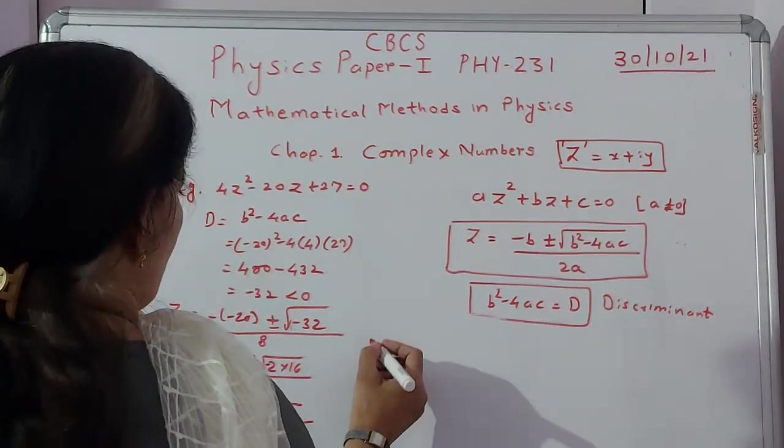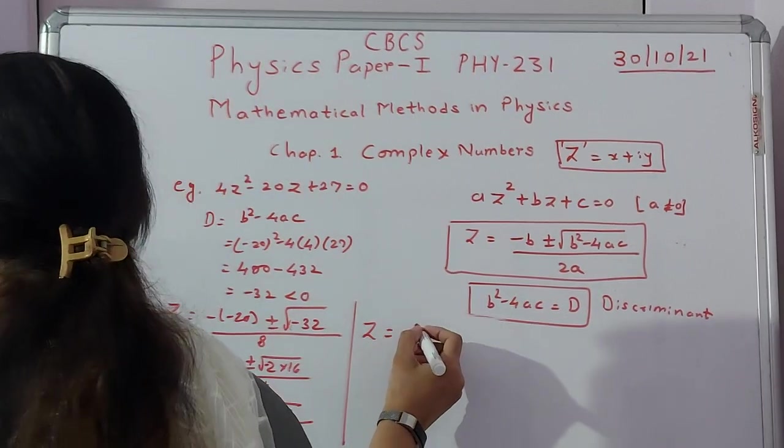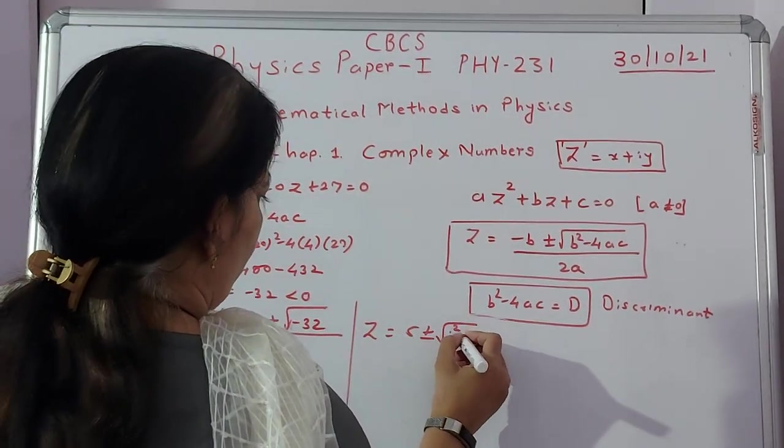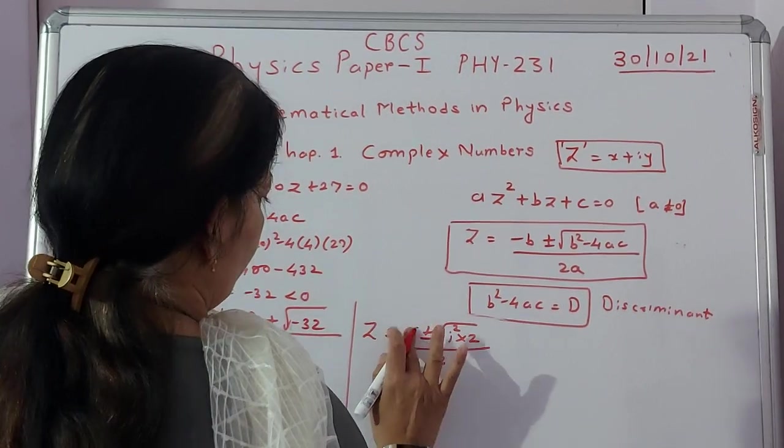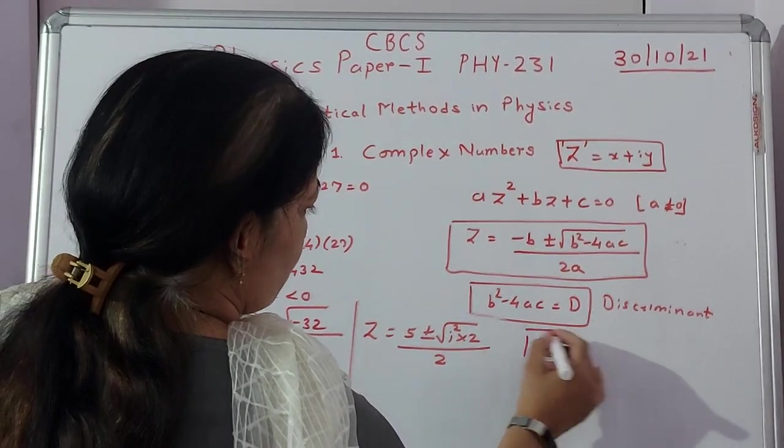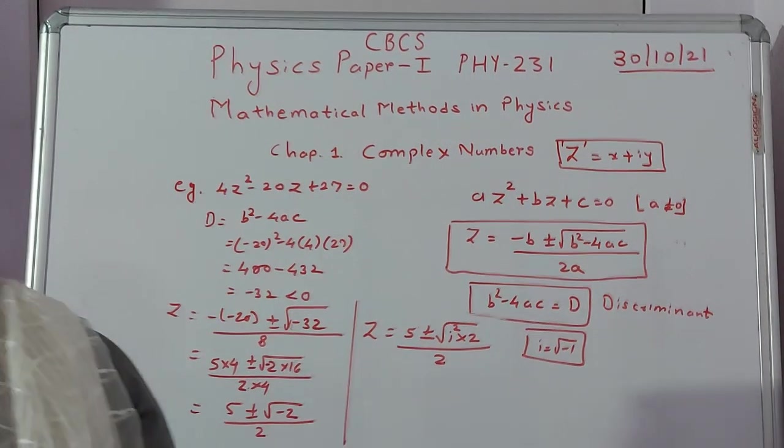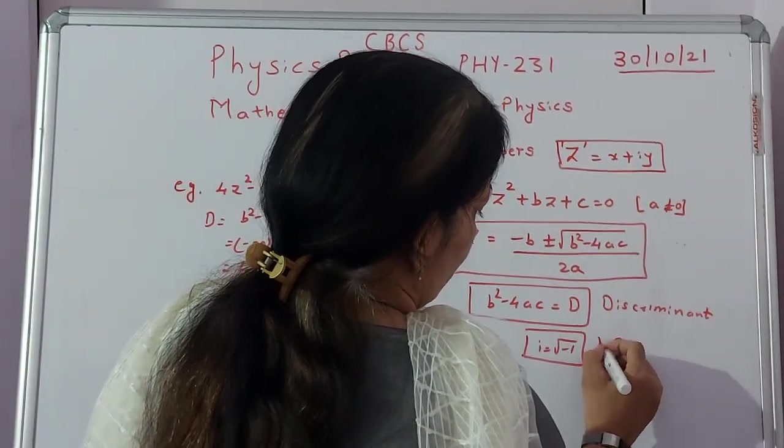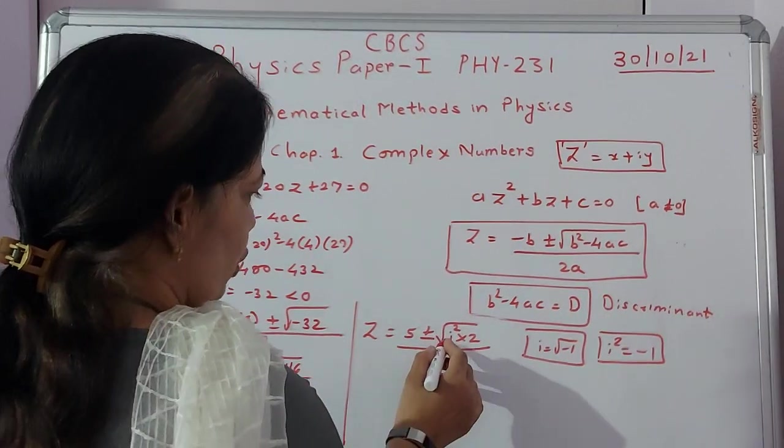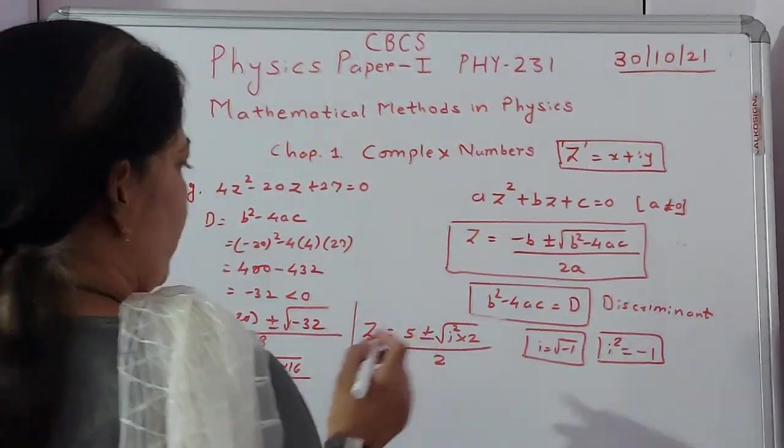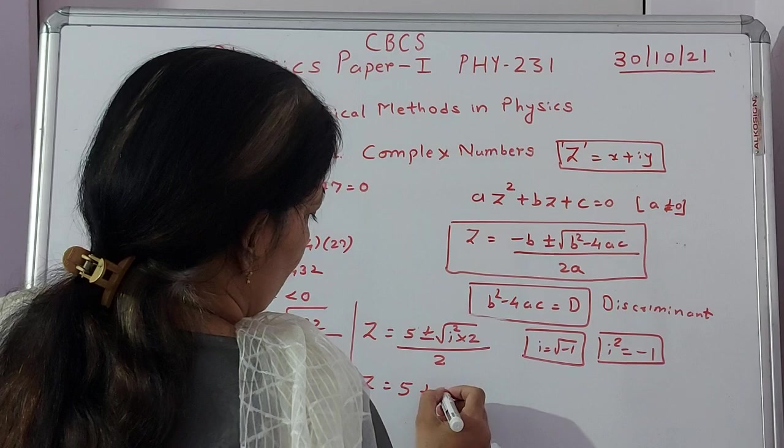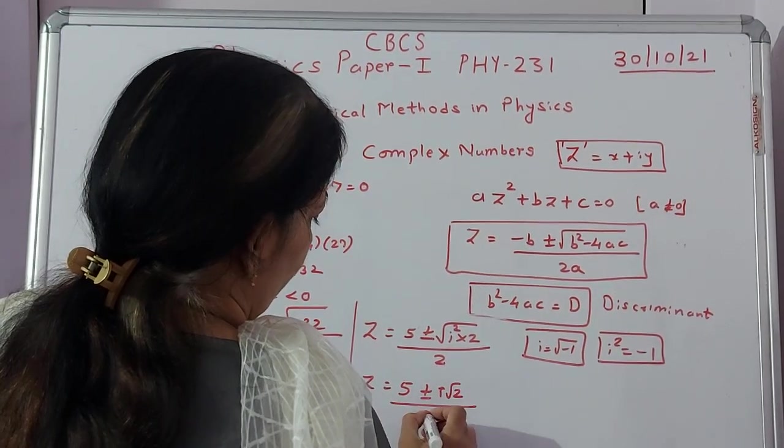Now this we can write in a proper fashion which is Z = (5 ± √(i² × 2)) / 2. Now where this i² has come? i is basically √(-1), which is my i √(-1), and i² will become also -1. This i² is -1. So -1 × 2, so I got this answer. So how will I write this equation now? I will write Z = (5 ± i√2) / 2, right.